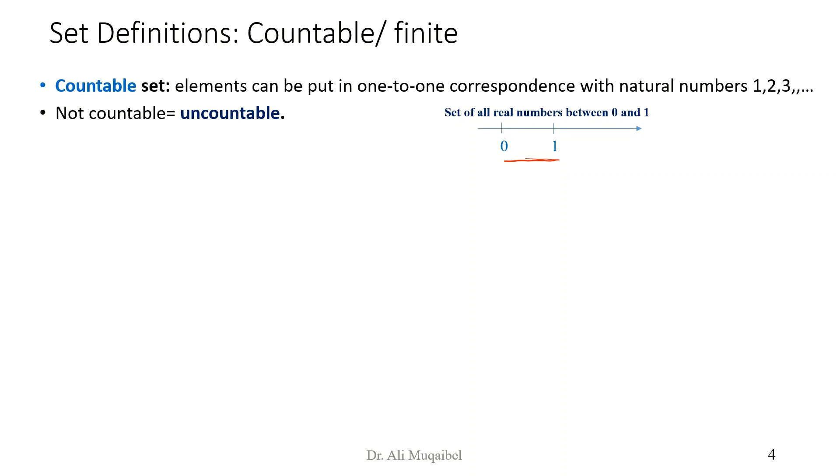We have countable or uncountable. We also have finite and infinite. A set is finite when it's empty or once you start counting the elements, you are going to finish. So counting its elements terminates. Finite number of elements, we have limited number of elements inside the set. If this is not the case, we call it infinite set.